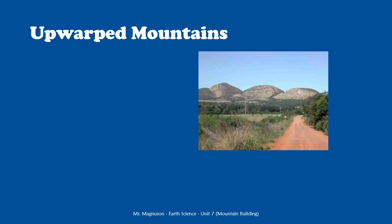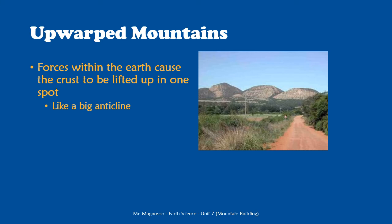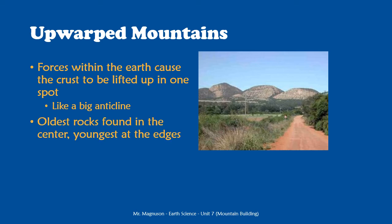The next type of mountain is upwarped mountains. Basically, forces inside the earth push upwards and lift these mountains up — you can think of it like a big anticline. We're generally going to find the oldest rocks in the center of these mountains and the youngest rocks at the edge, because as that middle area is pushed up, those are the oldest rocks brought to the surface. These are caused by forces within the earth lifting up the crust, such as a very large mass of magma rising up that never quite reaches the surface, or a mantle plume pushing up the crust without causing enough melting to form hotspot volcanoes.